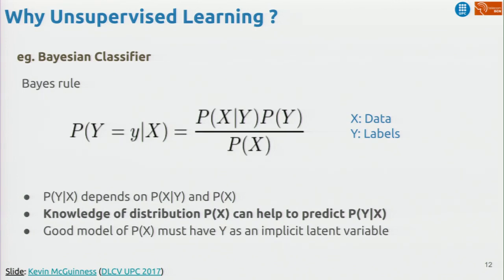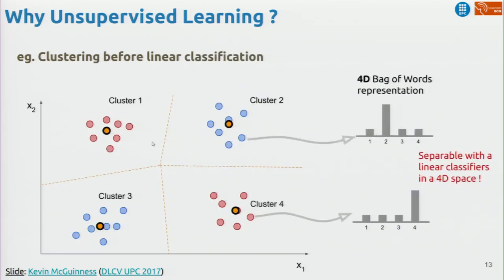Imagine you are doing some Bayesian classifier and you want to apply Bayes' rule. Learning the distribution of data would mean learning the distribution p(x). And knowing all this would help you in predicting a label based on the data. You've probably done bag of visual words in another module — before the deep learning era, people used to have these features and cluster them to create a vocabulary.